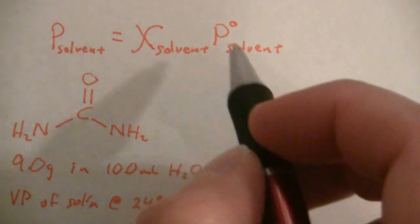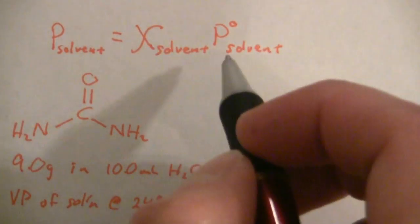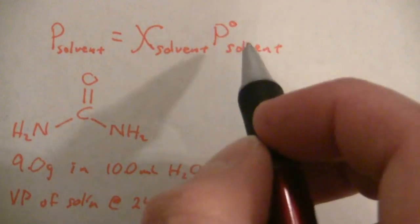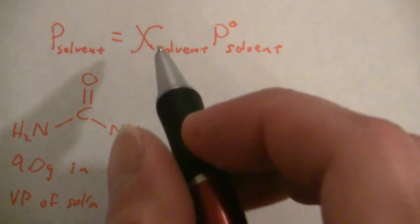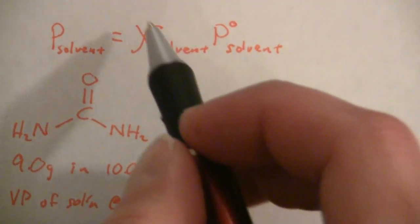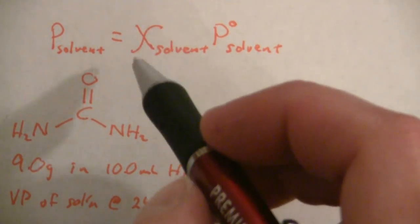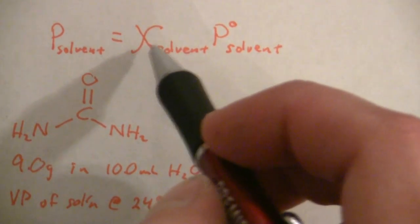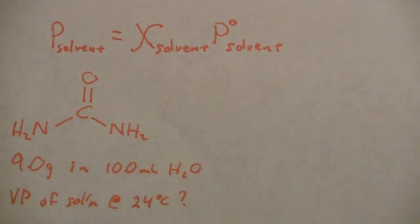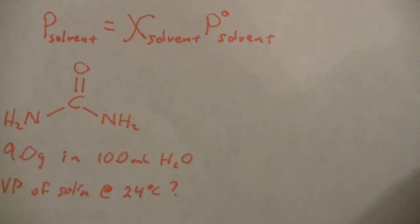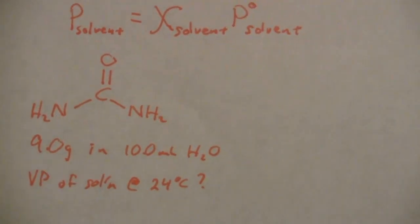It's going to be reduced by however much less solvent you have in the solution. If it's pure solvent, the mole fraction would be 1, and you'd have 1 times the vapor pressure of the pure solvent. But if it's 50% solvent by mole fraction, then it'll be half the vapor pressure.